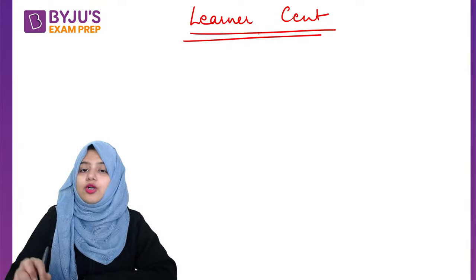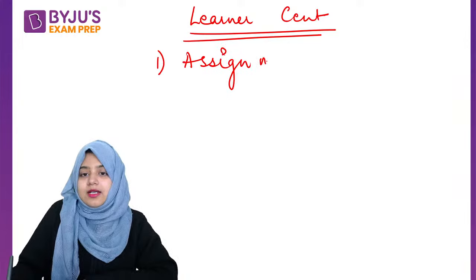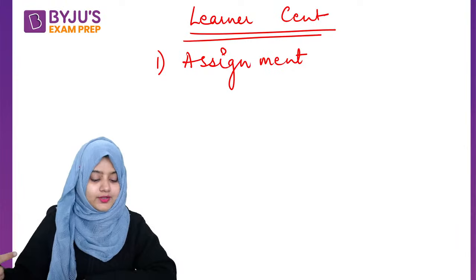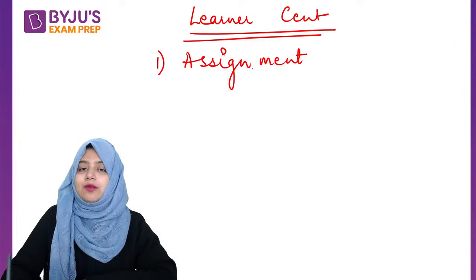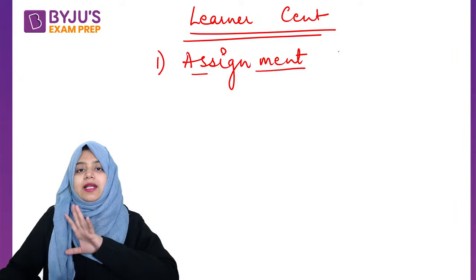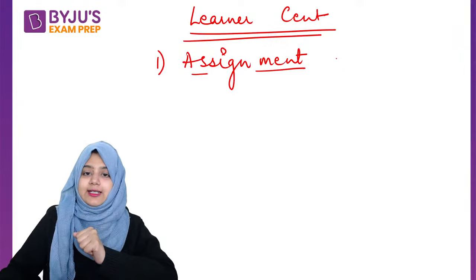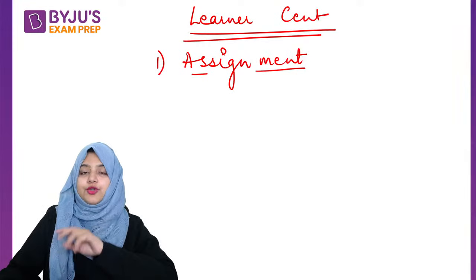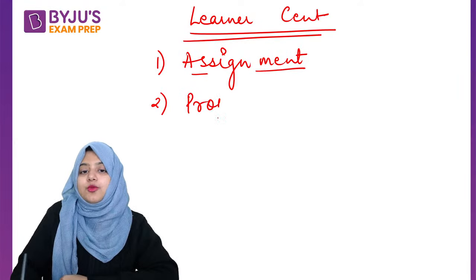Now what methods come under learner-centered methods of teaching? First is the assignment method. I taught you a topic in class and gave you homework on it. When you go home and do that work, you apply your knowledge — you become active. That is the assignment method. Next is the project method. The difference between assignment and project: assignment is homework on what was taught in class, while a project is on a different topic not necessarily covered in class.